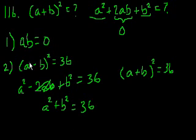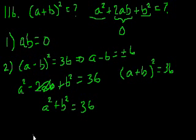So both statements together are sufficient. And this is interesting because if you think about it, it makes a lot of sense. This statement tells us that a minus b is equal to plus or minus 6. So it tells you that the difference between a and b is either positive 6 or minus 6, or that one is 6 bigger than the other, but we don't know which way it goes.